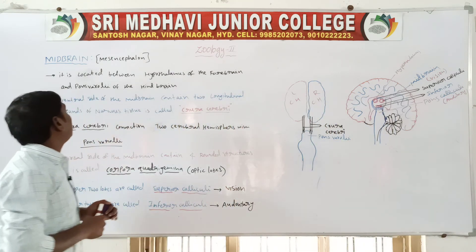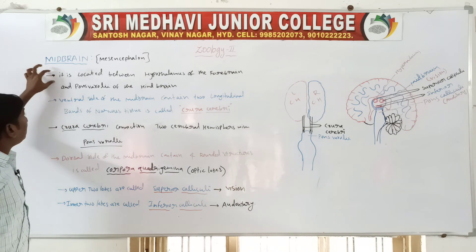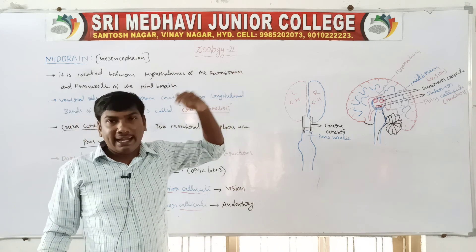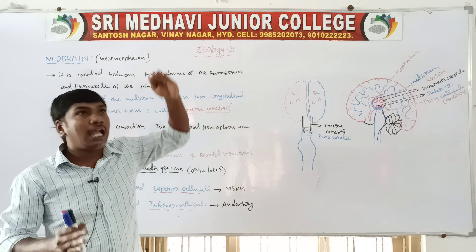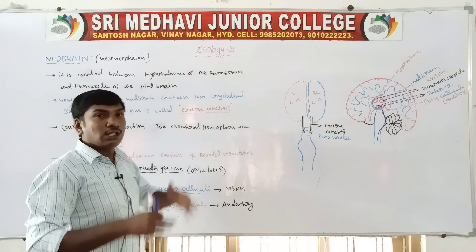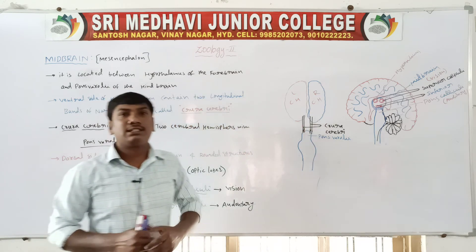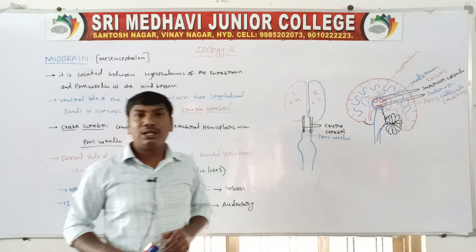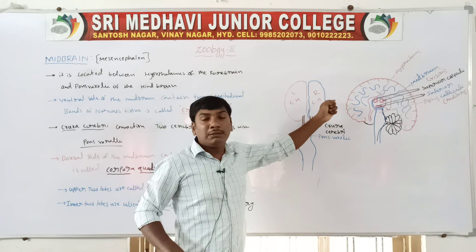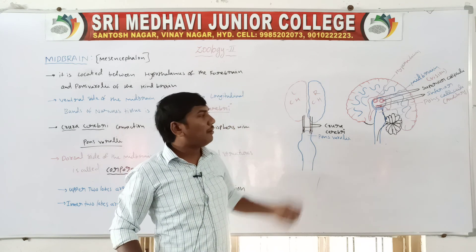Once revised — the midbrain is also called as mesencephalon. The midbrain is located between the hypothalamus of the forebrain and pons varolii of the hindbrain. The ventral side of the midbrain contains two longitudinal bands called as crura cerebri. The crura cerebri connects the cerebral hemispheres with the pons varolii.